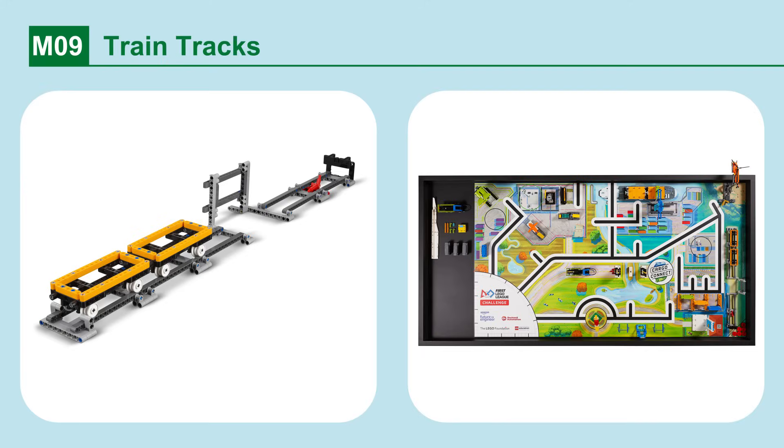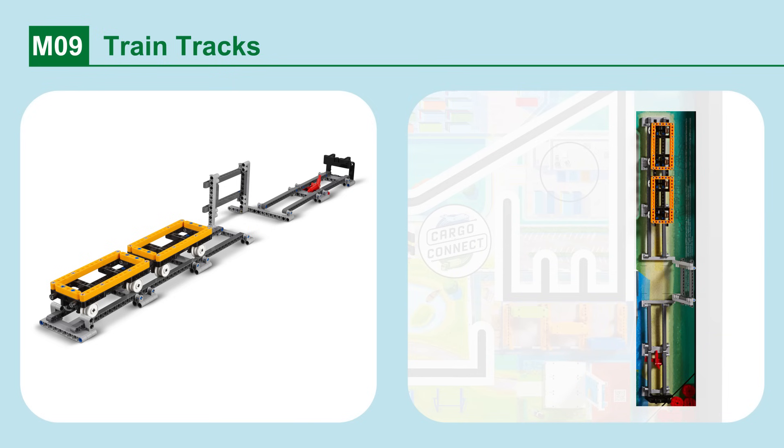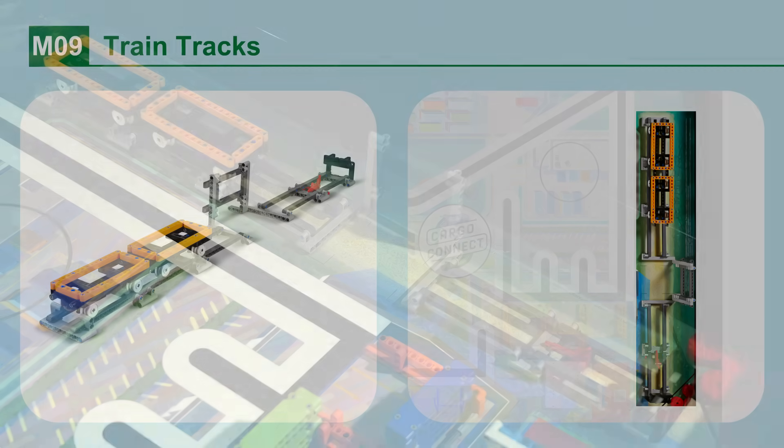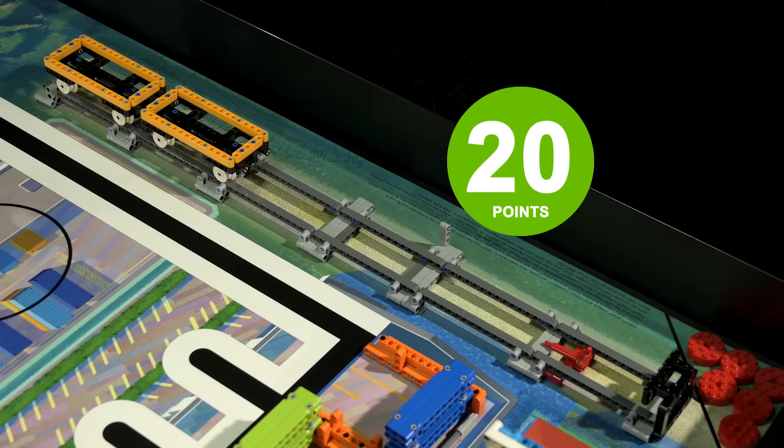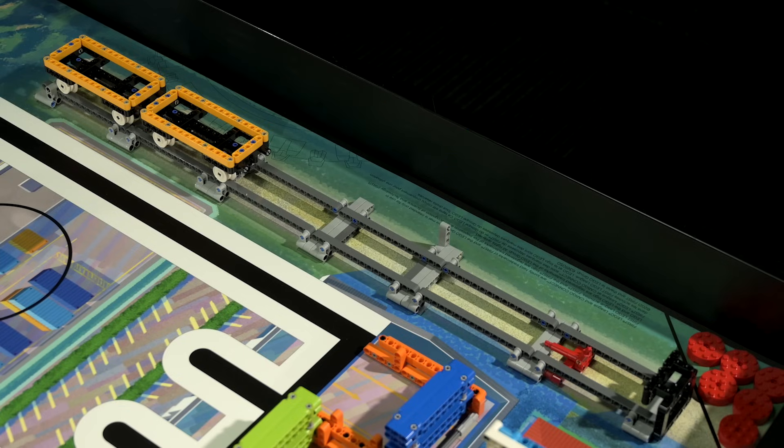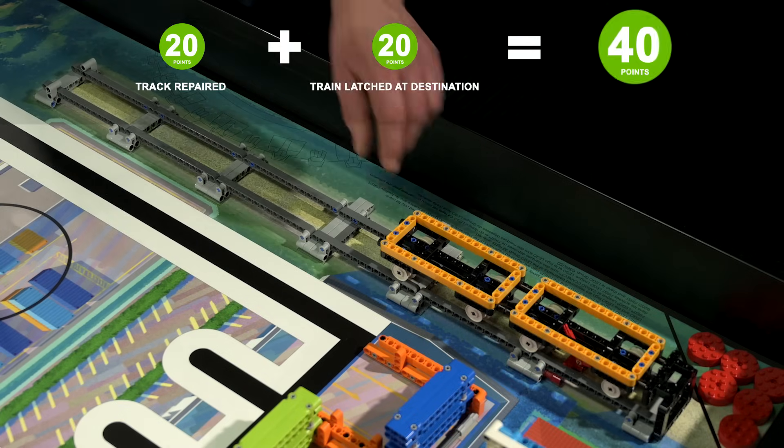Mission 9. Train tracks. Lower the section of the train track and get the train to its destination. If the train track is repaired so that it rests completely down to the west. If the train has reached its destination and is latched at the end of the tracks.